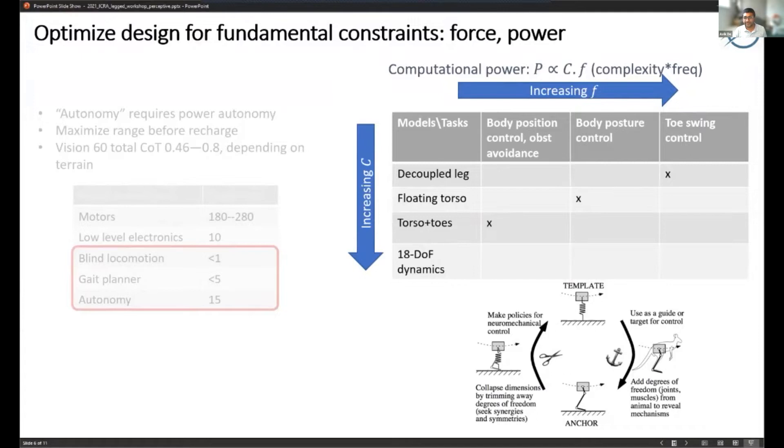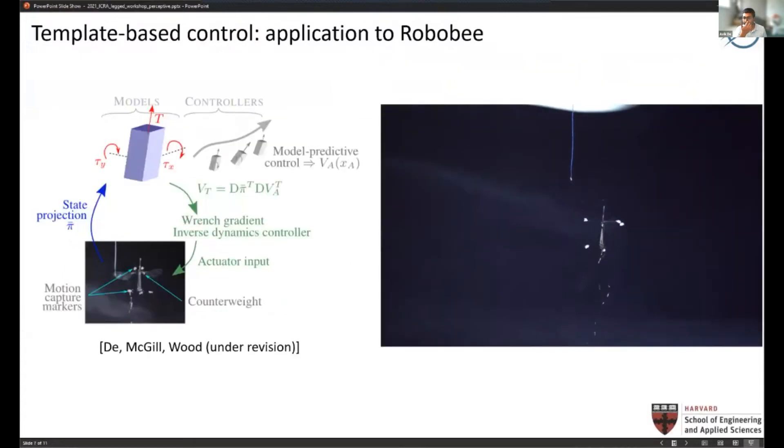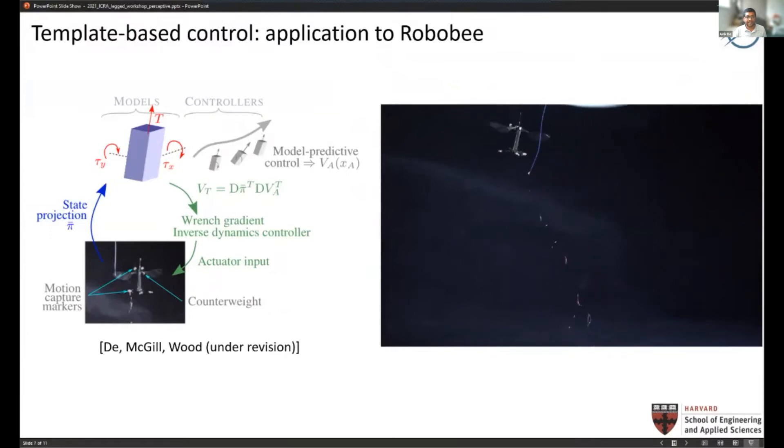One question is how do we take these simplified template models and anchor them on the robot. I know this is a legged robot workshop, but I wanted to talk quickly about one approach that's almost published now.